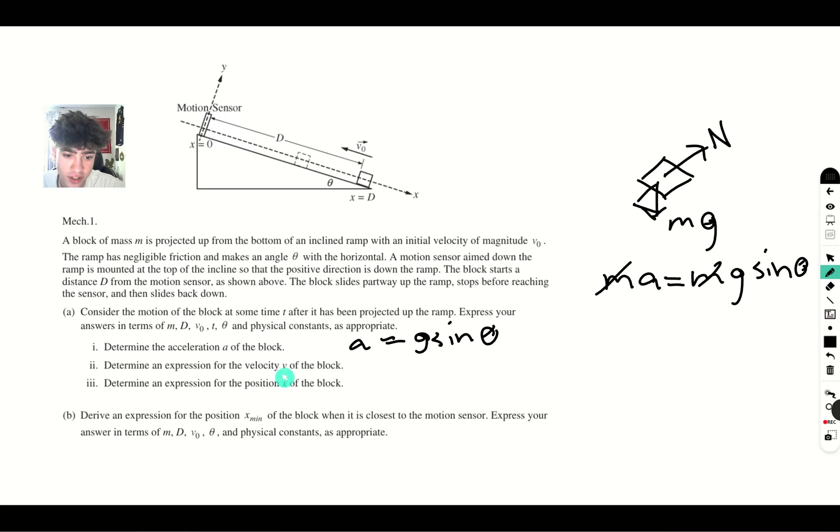For the rest of these, we can just apply kinematics to find the velocity. We are given a starting velocity, v initial. So v is equal to v initial minus g sine theta t, because we're using v final equals v initial minus acceleration times time.